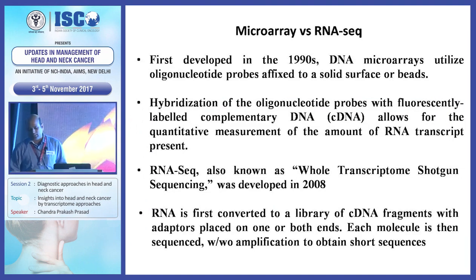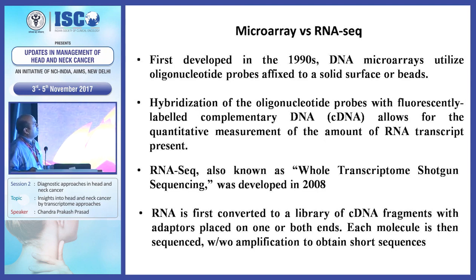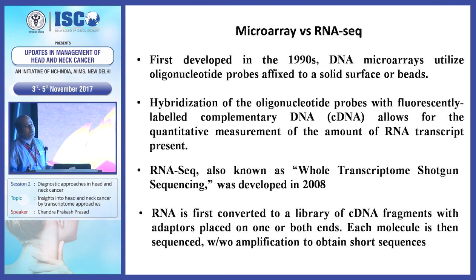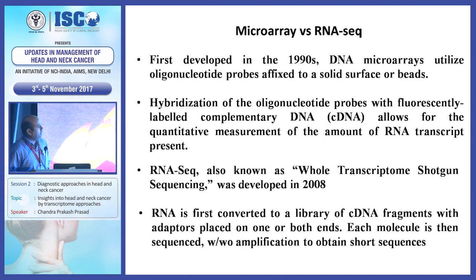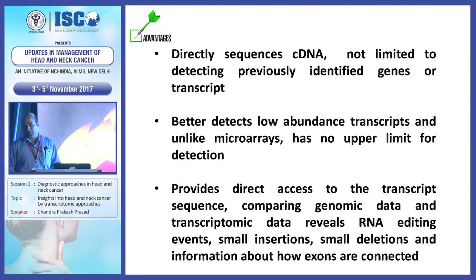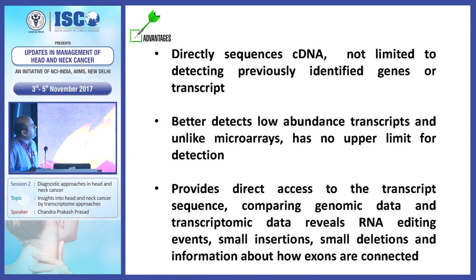The two main techniques in transcriptomics are microarray and RNA sequencing. In microarray, there is hybridization of oligonucleotide probes with fluorescent-labeled complementary DNA, which allows for quantitative measurement of RNA transcripts. In RNA sequencing, RNA is first converted into a library of cDNA fragments with adapters placed on one or both ends, and each molecule is then sequenced by deep sequencing to obtain short sequences. An advantage of RNA-seq is that it directly sequences cDNA, which is not limited to detecting previously identified genes as in microarrays.